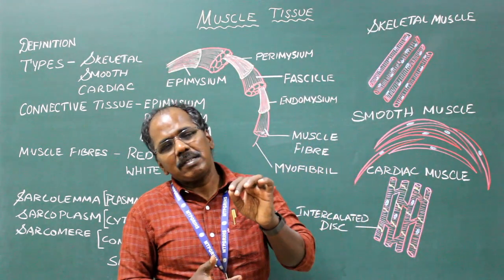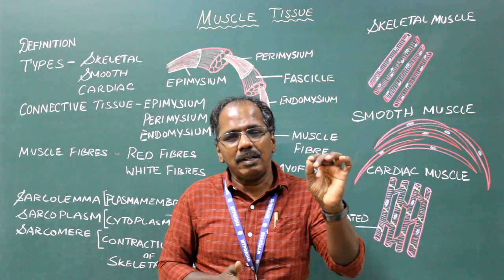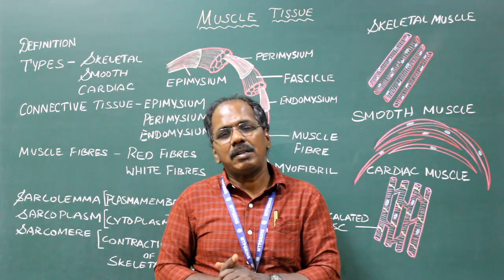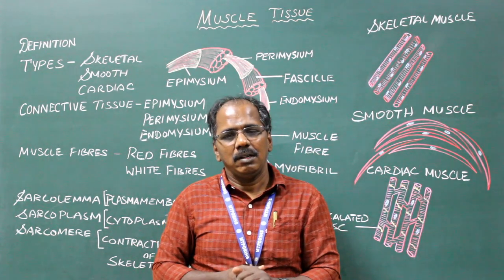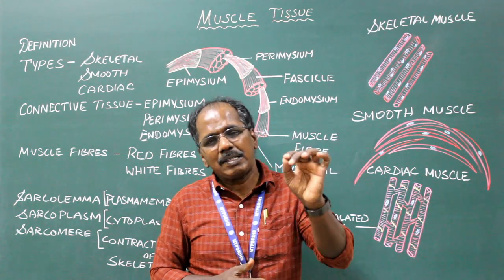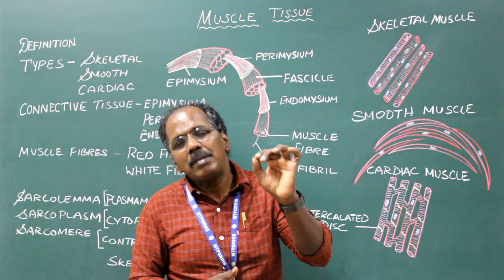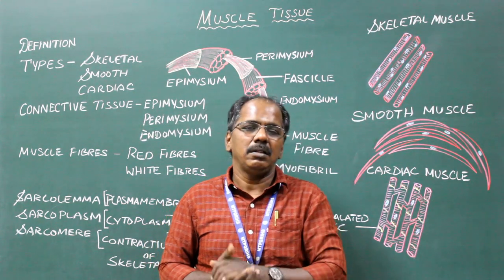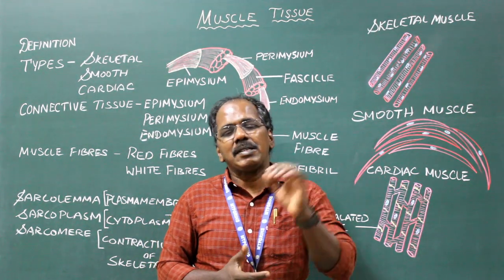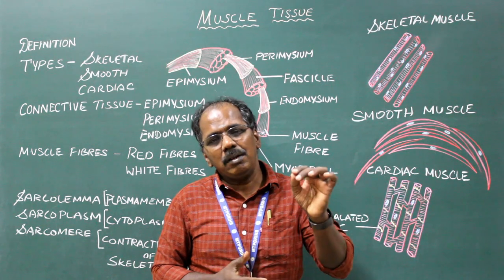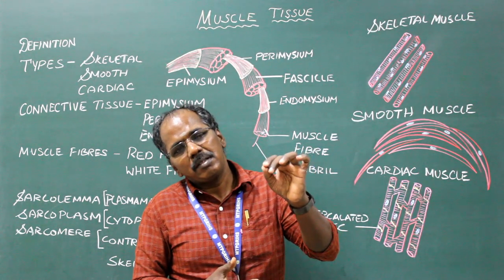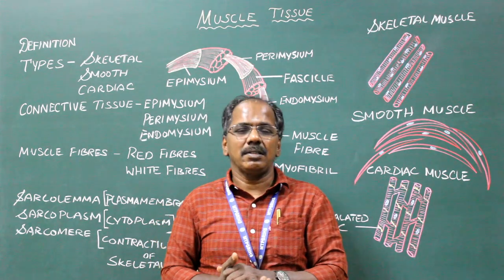Muscles have an origin and an insertion. The fixed or stationary attachment of a muscle is known as the origin. The free movable end of the muscle is known as the insertion.